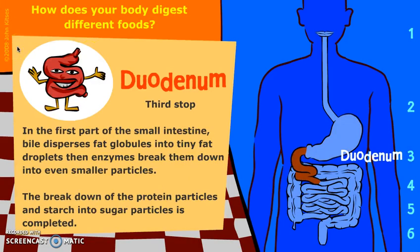The duodenum is the first part of the small intestine. Here, bile is added from the liver in order to break down large fat globules into tiny fat droplets, which are then able to be digested by enzymes specifically added to break down fat. Other enzymes are added at this point which work on proteins and carbohydrates.